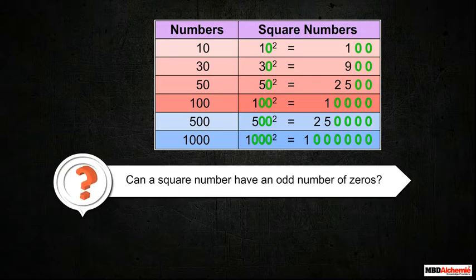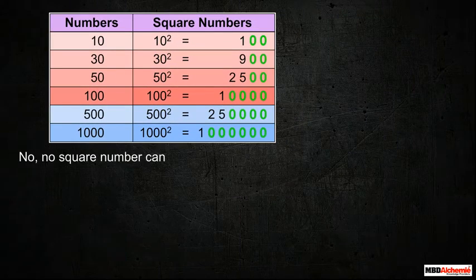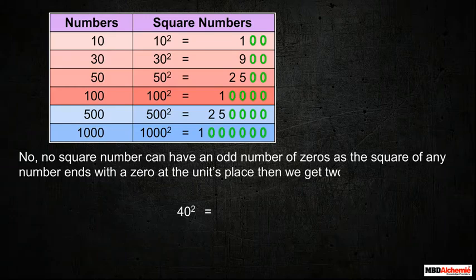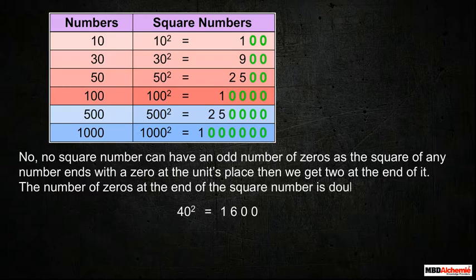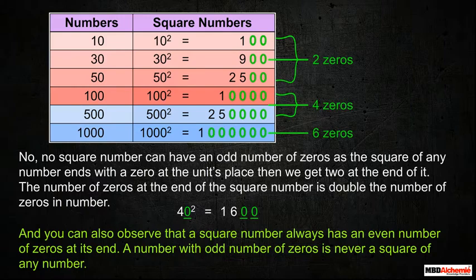Can a square number have an odd number of zeros? No, no square number can have an odd number of zeros, as the square of any number ends with 0 at the unit's place, giving 2 zeros at the end. The number of zeros at the end of the square number is double the number of zeros in the number, and a square number always has an even number of zeros at its end. A number with an odd number of zeros is never a square of any number.